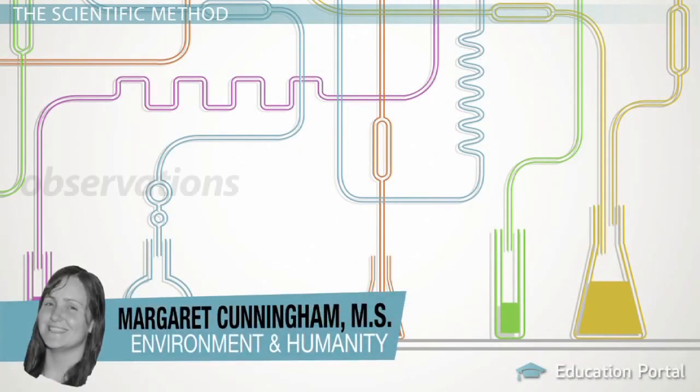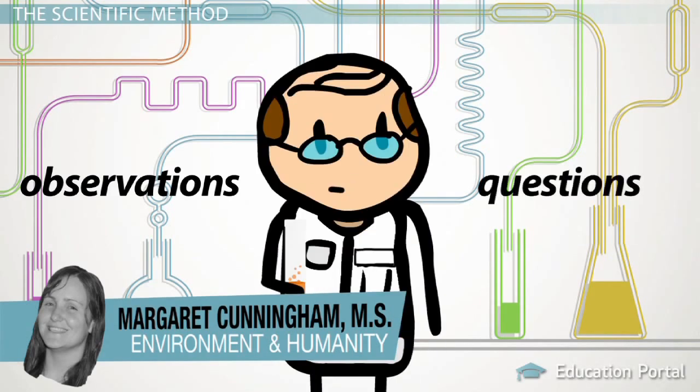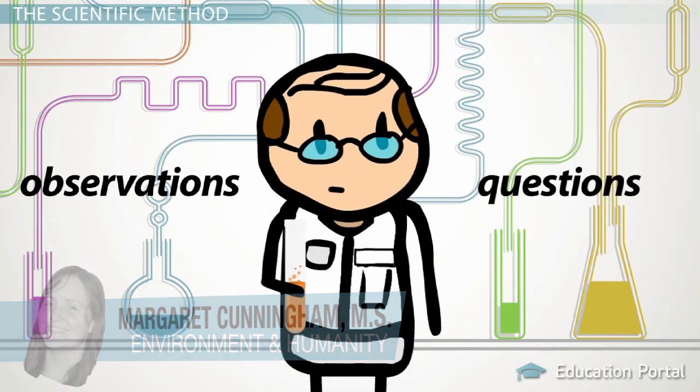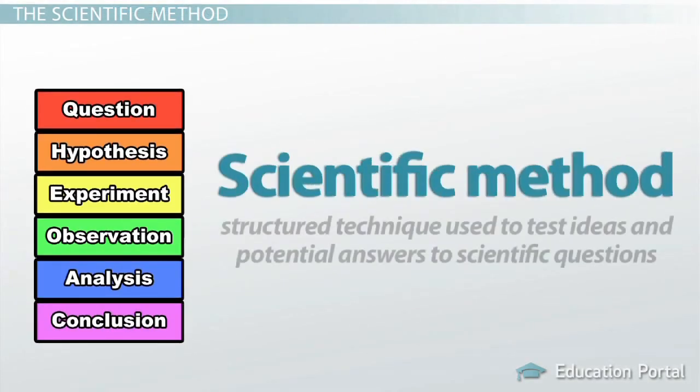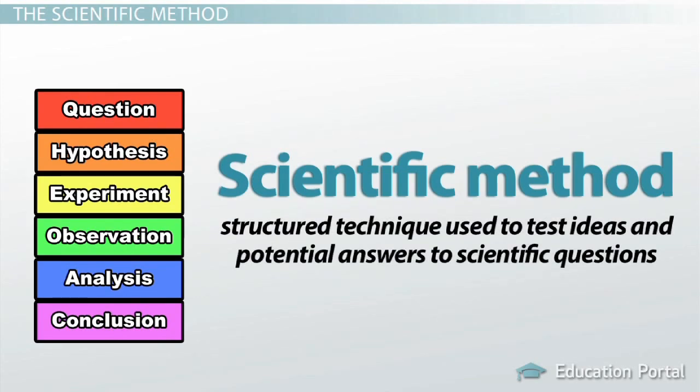All science begins with making observations and asking questions. These questions are often developed because people want to learn more about what they are observing. To find the answers to their questions, researchers use the scientific method, which is a structured technique used to test ideas and potential answers to scientific questions.